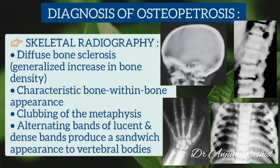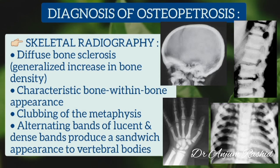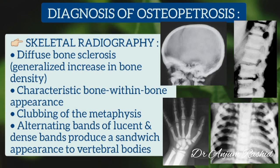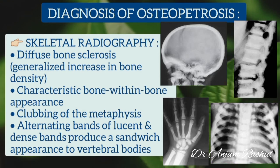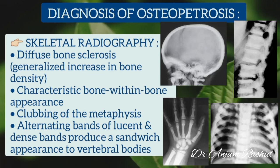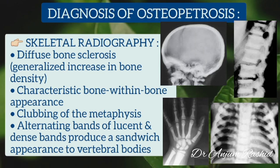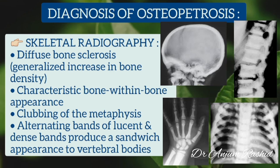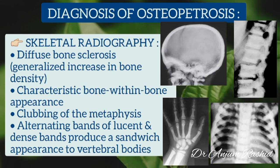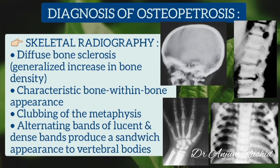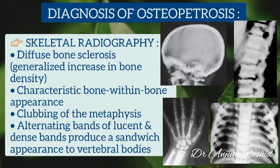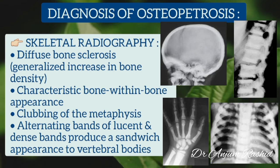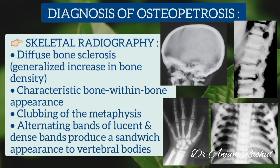For diagnosis of osteopetrosis, skeletal radiographs should be done. These show diffuse bone sclerosis — that is, a generalized increase in bone density. A characteristic bone-within-bone appearance is a very important diagnostic feature. There is also clubbing of the metaphysis and alternating bands of lucent and dense bone, producing a sandwich appearance of the vertebral bodies.